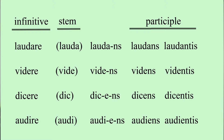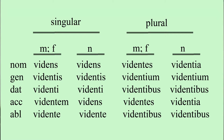Now all of these present tense participles are declined in the third declension, for which we were using the sample of pater, patris. So we could say laudans, laudantis. For videns in the nominativus: videns; genitivus: vidensis; dativus: videnti; accusativus: videntem; and ablativus: vidente. In the plural it would be: videntes, videntium, videntibus, videntes, videntibus.